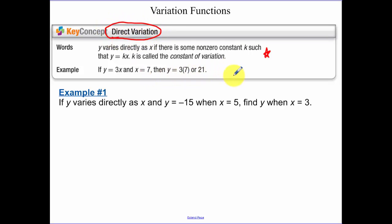When y varies directly as x, there is some constant k. Back in chapter, I think it was 2 when we were talking about slope, that was slope, where this is our function, and k is called the constant of variation.